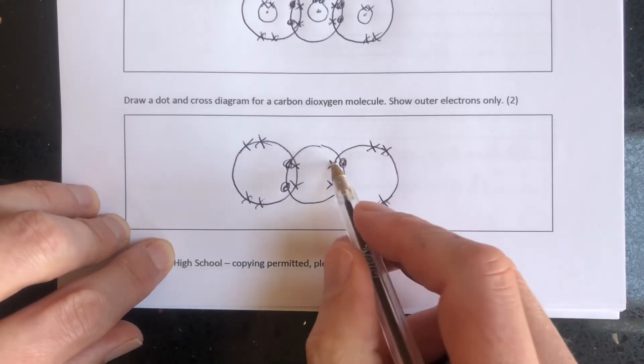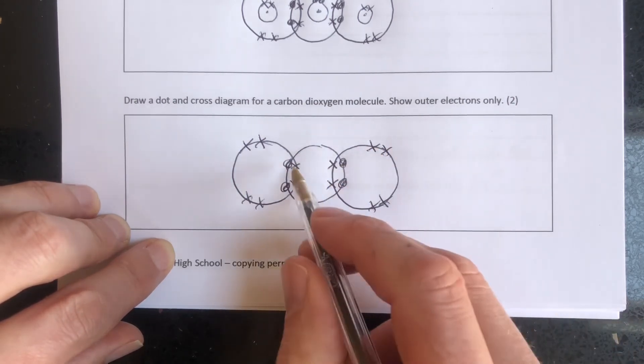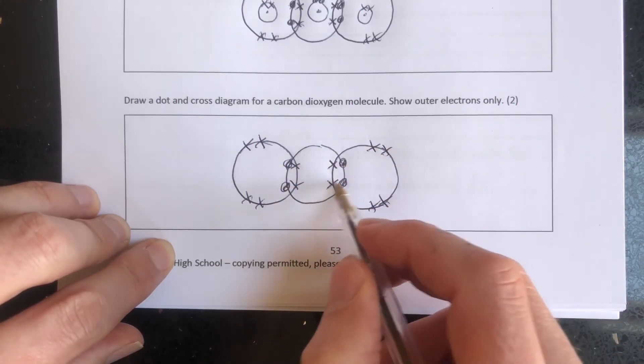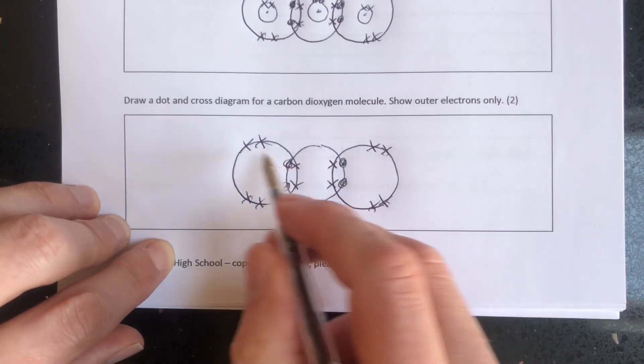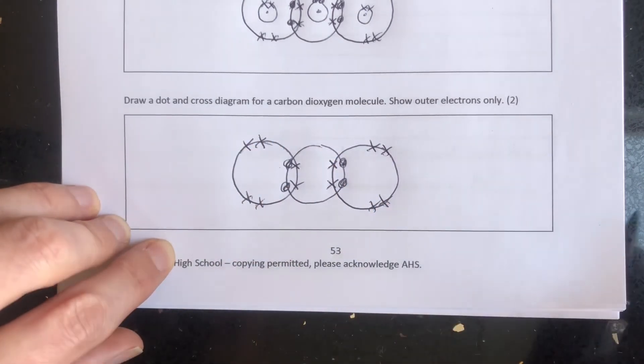So one, two, three, four, five, six, seven, eight on this one. One, two, three, four, five, six, seven, eight on the middle one. And one, two, three, four, five, six, seven, eight on that one. That's all correct.